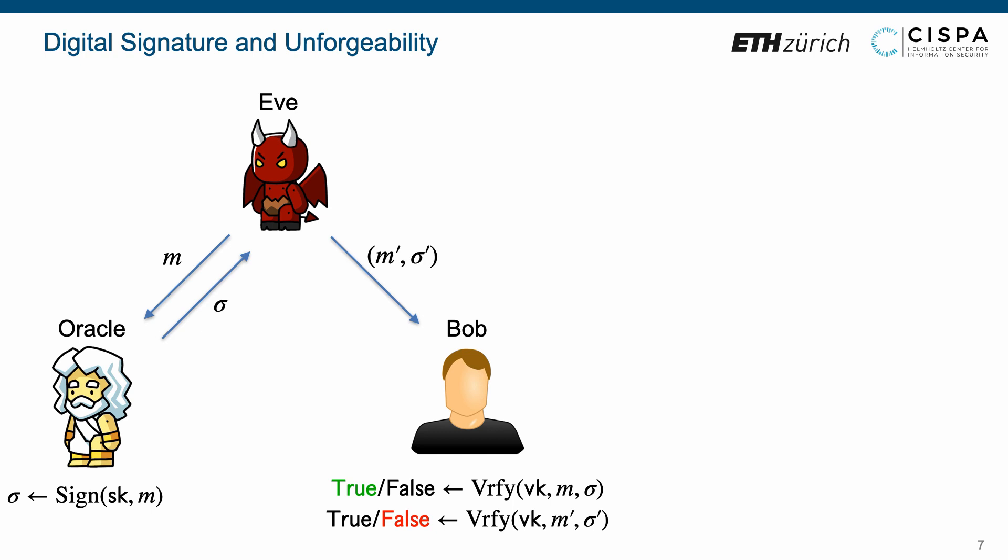In the unforgeability experiments, the signer Alice is simulated by a signing oracle that inputs a message M and outputs a real signature sigma. The adversary Eve has access to such signing oracle and finally outputs a pair of message and signature.